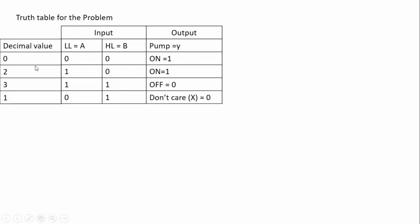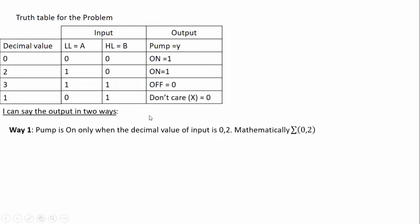The decimal values for the inputs are: A=0, B=0 gives decimal 0; A=0, B=1 gives decimal 1; A=1, B=0 gives decimal 2; A=1, B=1 gives decimal 3. I will express the output in two ways. Way 1: the pump is on only when the decimal value of the input is 0 or 2. Mathematically this is written as the summation of minterms 0 and 2 — meaning output is high when the decimal value of the input is 0 or 2.